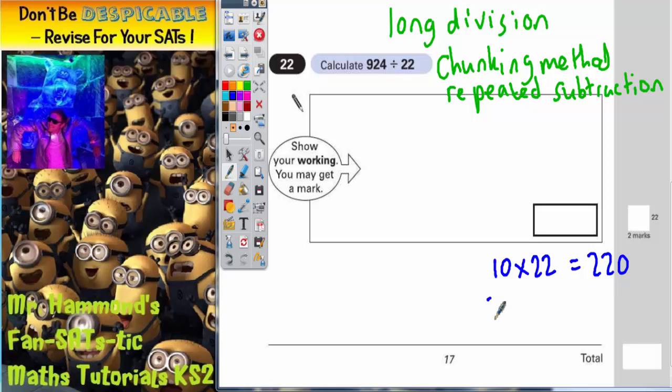If we doubled that, 20 lots of 22 would be double the answer. And double 220 is 440. So that would be nice and easy as well.